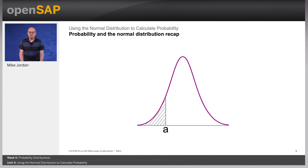The area under the normal distribution can be used to calculate probabilities for a normally distributed random variable. This means that the probability that a normal random variable x equals any particular value is zero. The probability that x is greater than a is equal to the area underneath the normal curve between a and plus infinity — the non-shaded area in the diagram. The probability that x is less than a is equal to the area under the normal curve between a and minus infinity — that's the shaded area in the diagram. The total area under the curve is equal to 1.